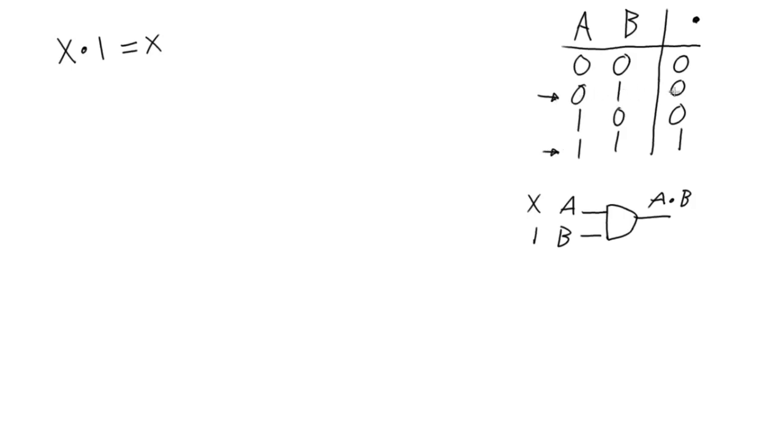We see that the output just follows the input directly. So A is a 0, the output's a 0. A is a 1, the output's a 1. So that's kind of a way to make sense of that theorem.